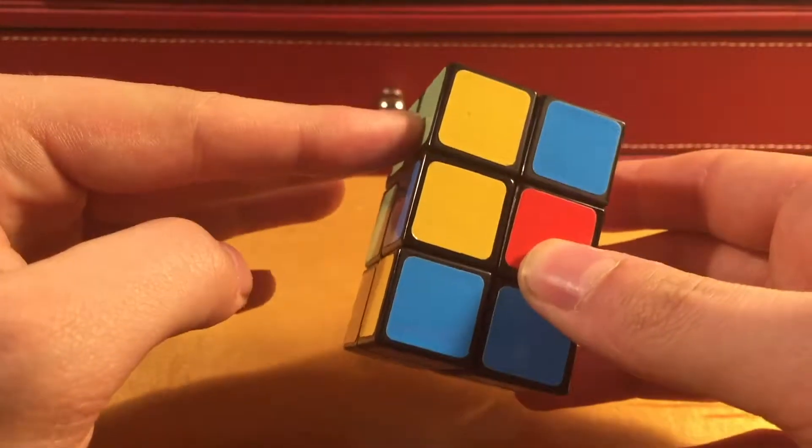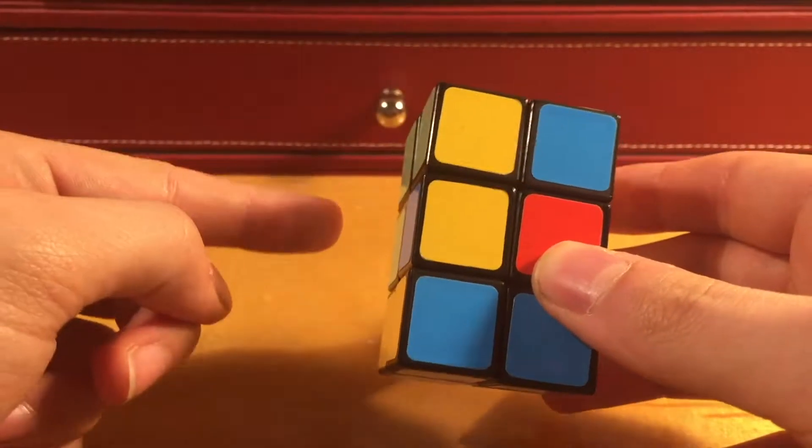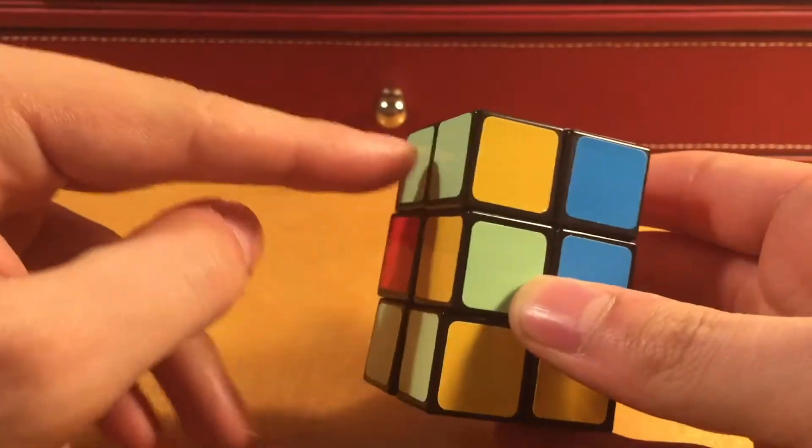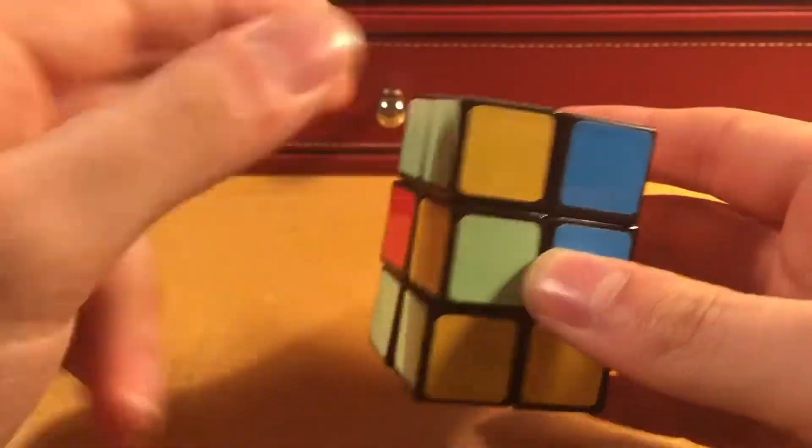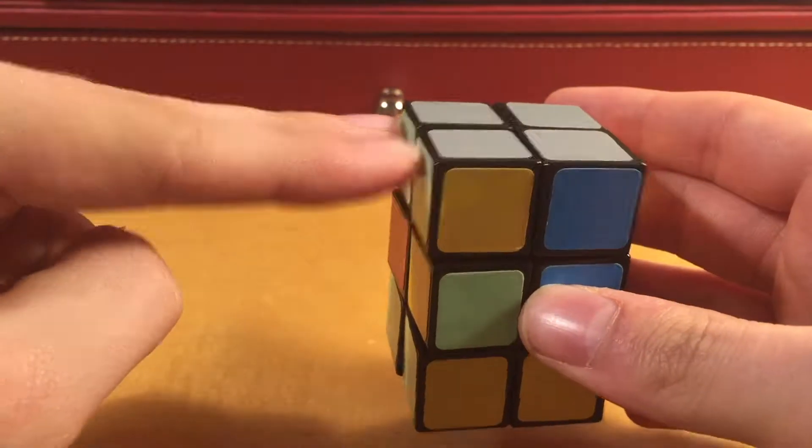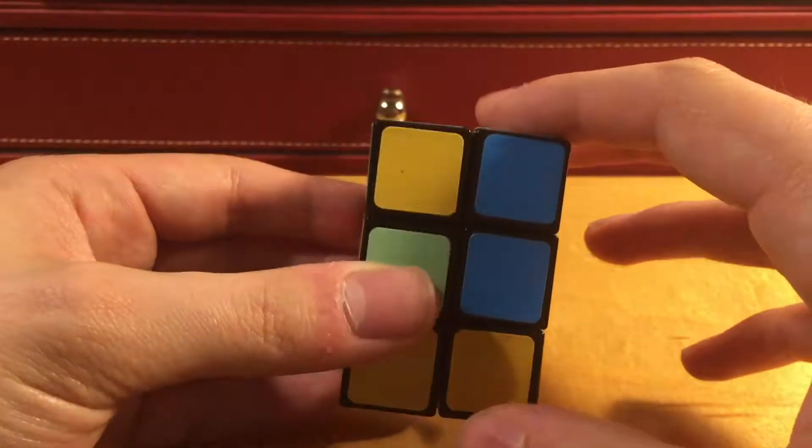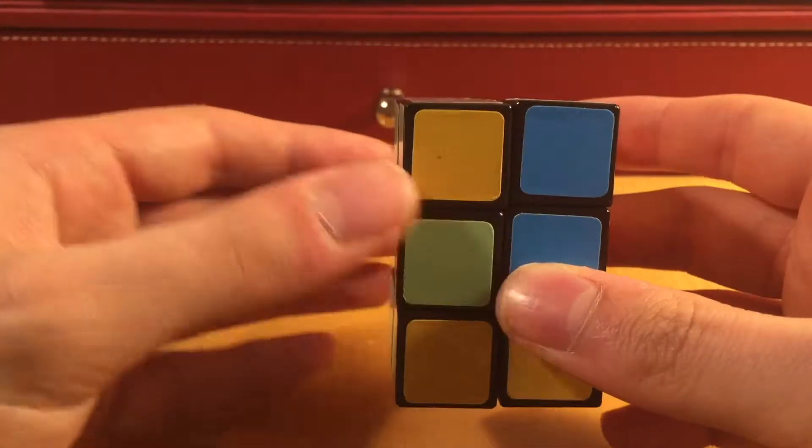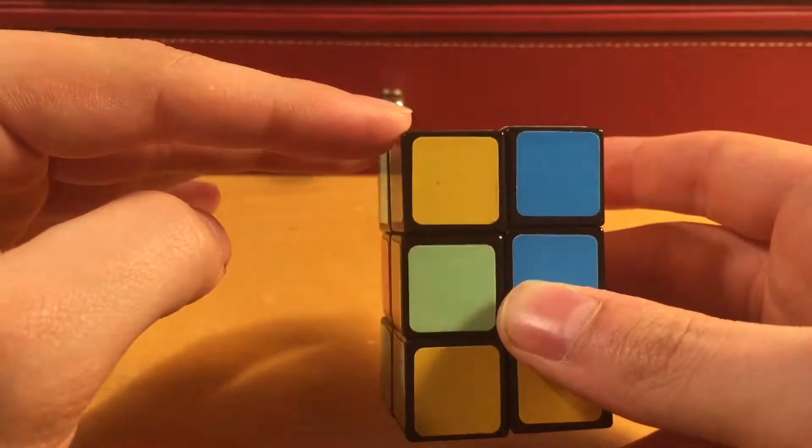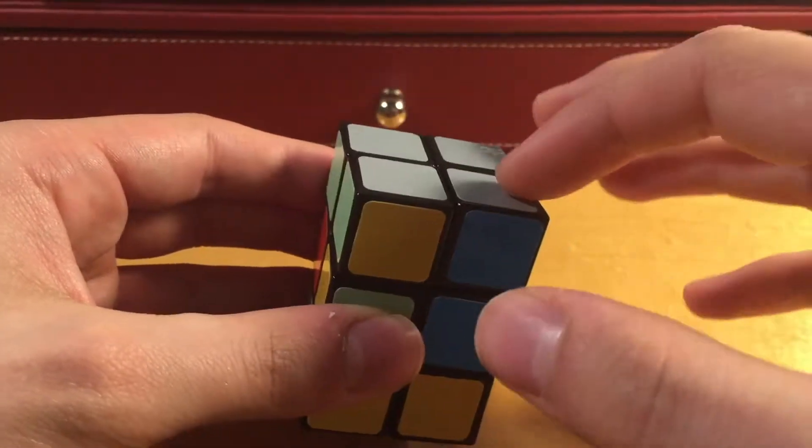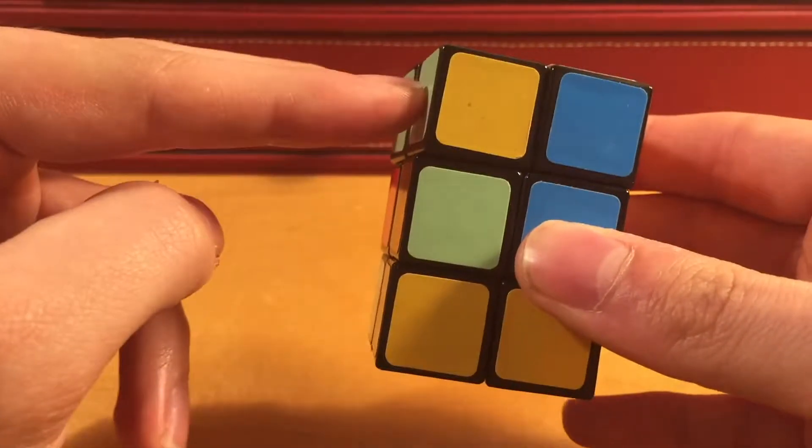Now, in order to execute that algorithm a second time, because I mentioned that you need to do it twice if you're in the previous state, what you're going to need to do is hold the cube so that this top bar of properly paired corners is to the left. Now, this is the other state that I had mentioned. Most of the time, you're going to solve the puzzle starting from this position. Very rarely do you get it in the state where the corners have to be swapped diagonally.